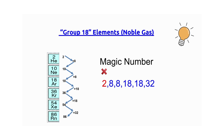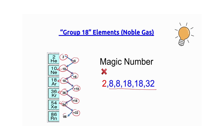Now let's practice writing the atomic numbers for group 18 elements, also known as noble gases. Here we will use the magic numbers 8, 8, 18, 18, and 32. The atomic number for helium is 2. 2 plus 8 gives 10, the atomic number for neon. 10 plus 8 gives 18, the atomic number for argon. 18 plus 18 gives 36, the atomic number for krypton. 36 plus 18 gives 54, the atomic number for xenon. 54 plus 32 gives 86, the atomic number for radon.